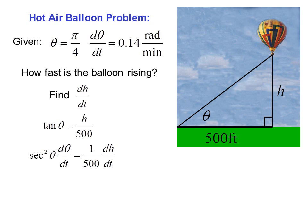Taking the derivative of both sides with respect to t, so we have to use the chain rule on both sides, we get secant squared theta d theta/dt equals 1 over 500 dh/dt. Of course, 500 is a constant.